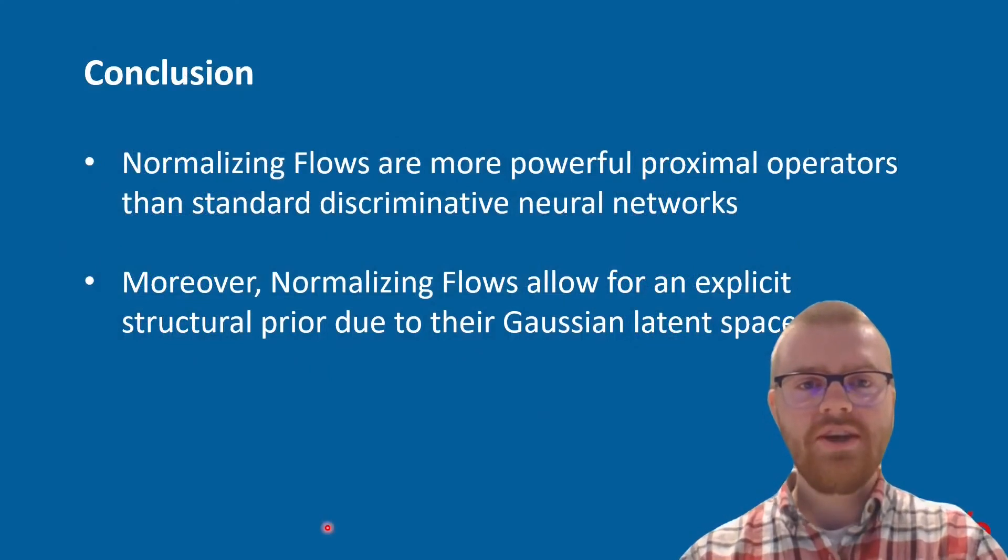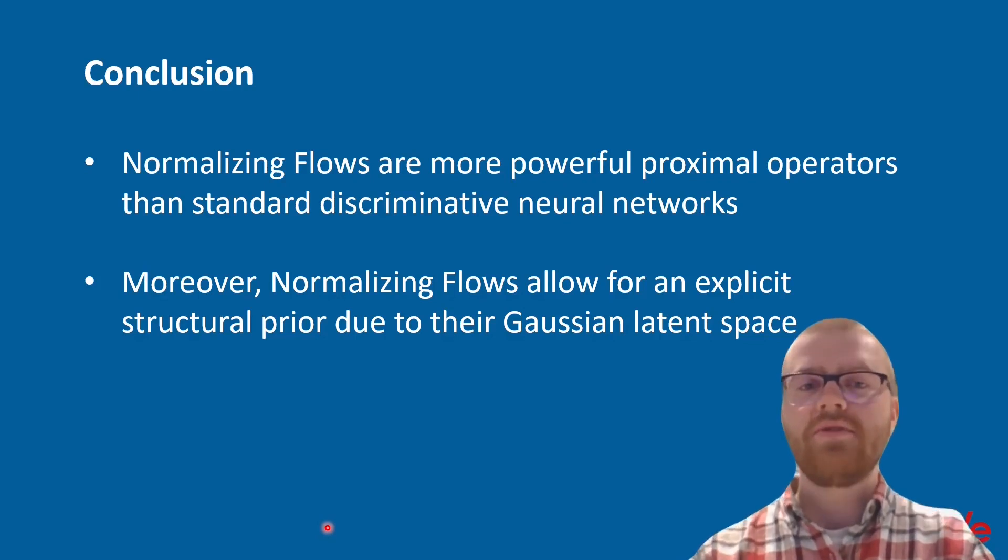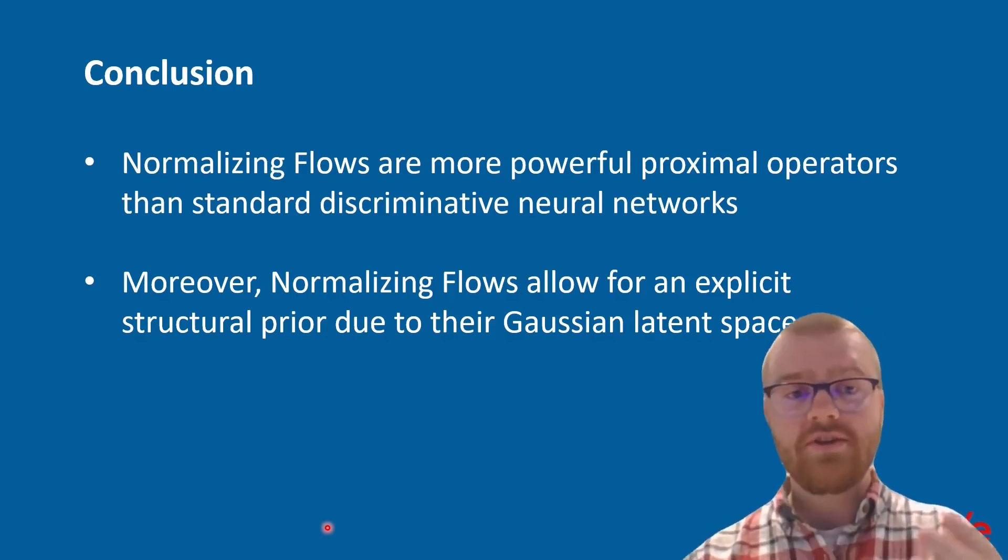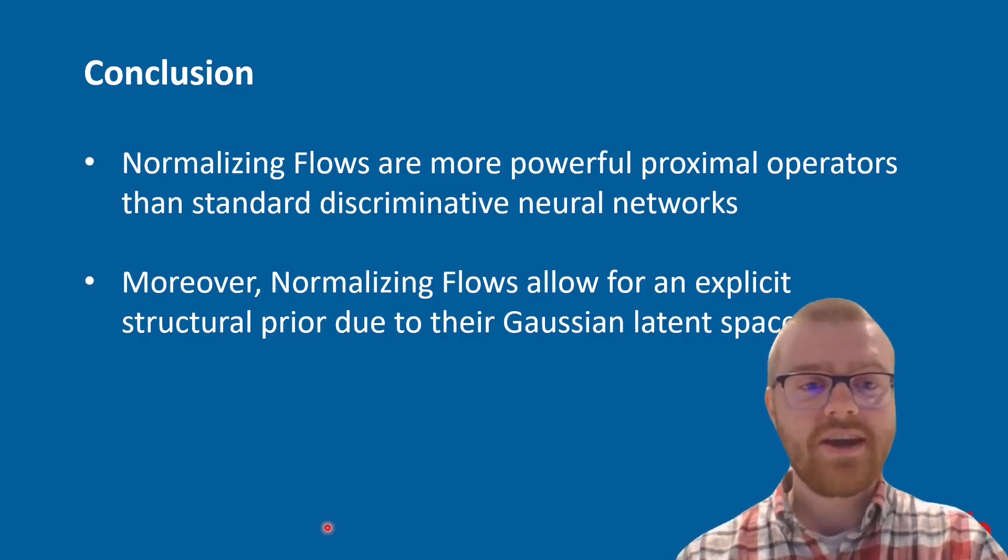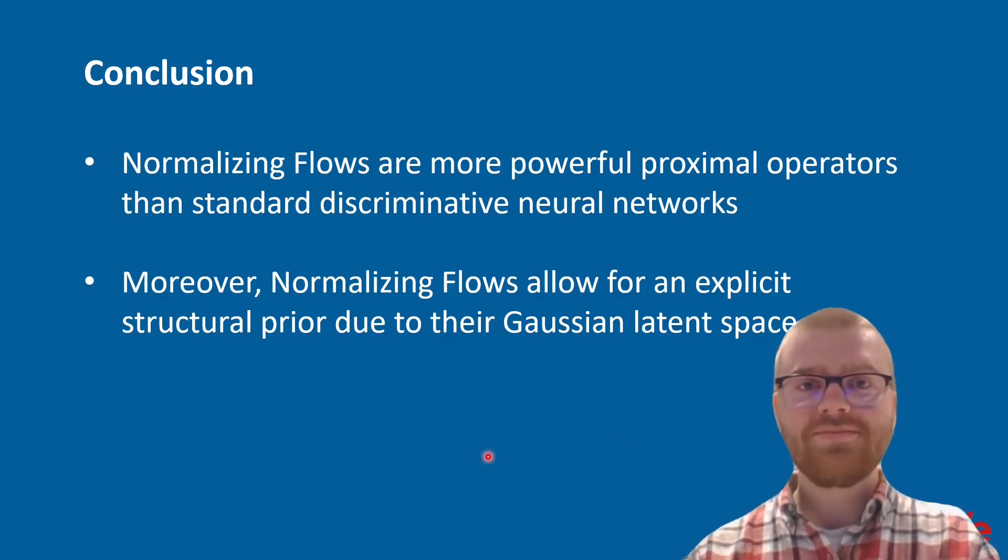What have we seen? We have seen that normalizing flows are actually a more powerful proximal operator than standard discriminative neural networks, and that these normalizing flows allow for an explicit structural prior due to their Gaussian latent space. I hope you found this interesting, and you can, of course, visit us at the online poster presentation, and hopefully also at the offline physical location in Singapore. Thank you very much.